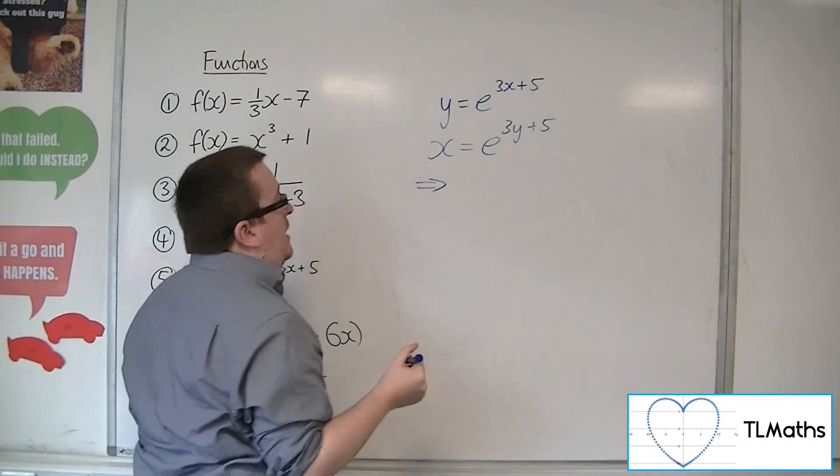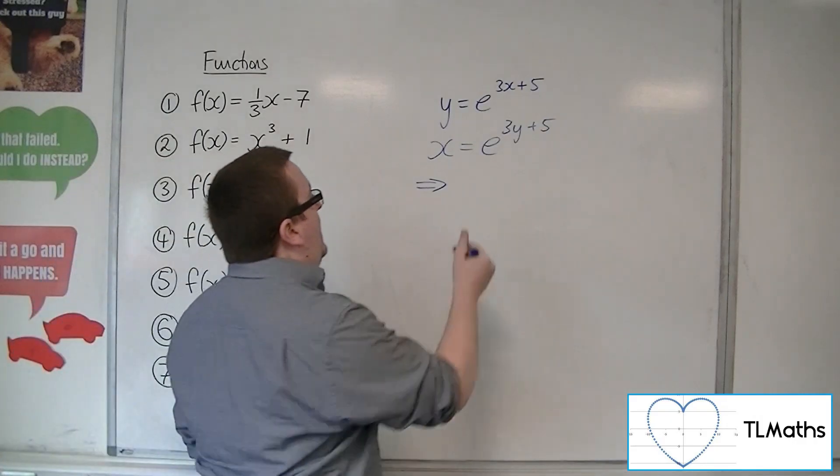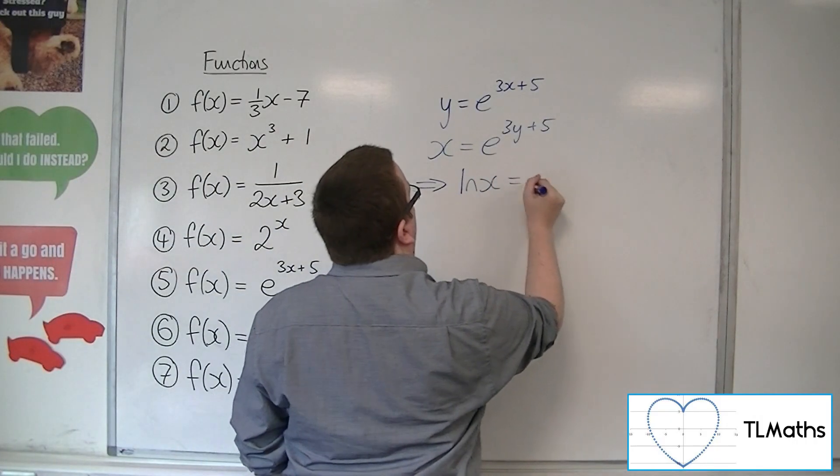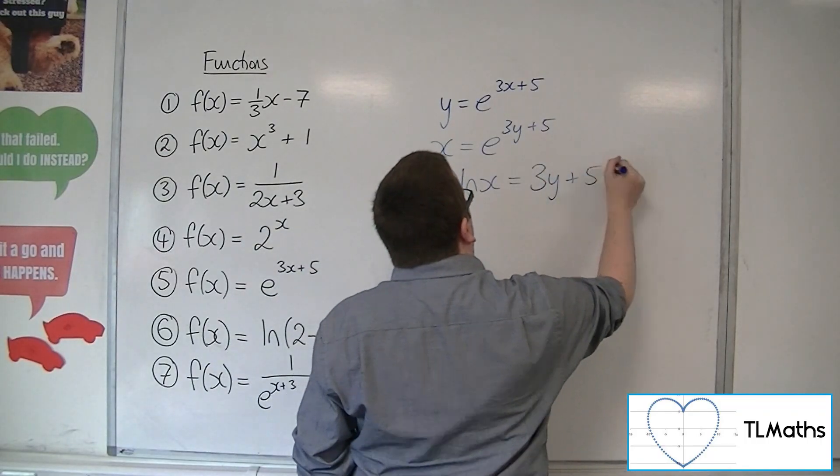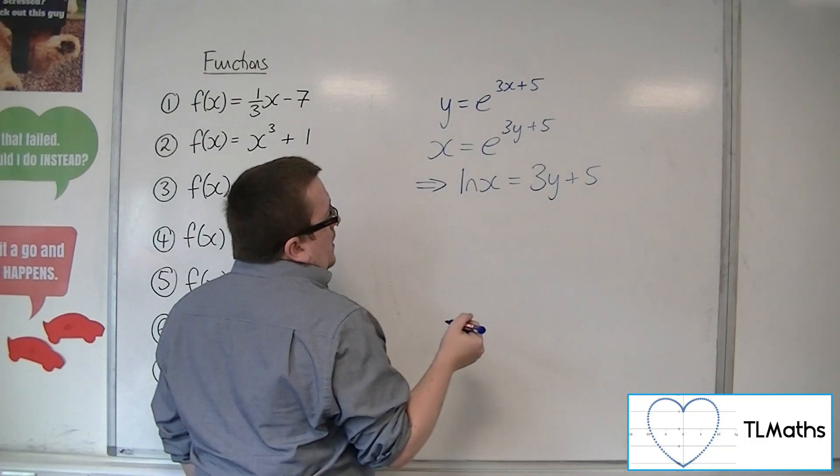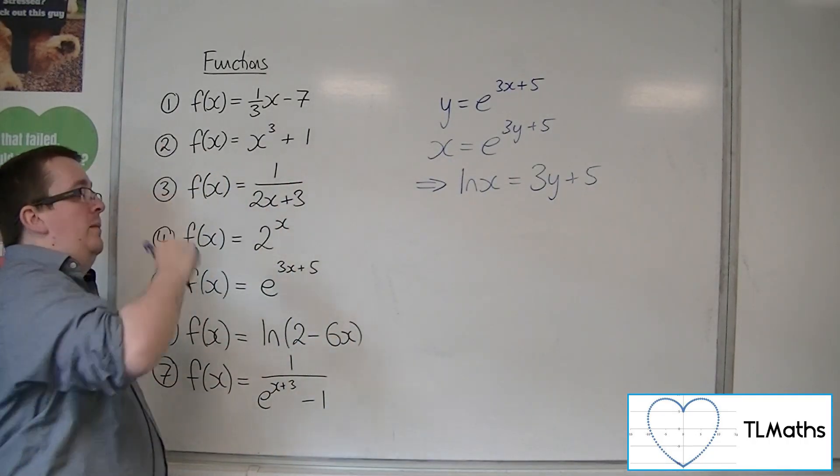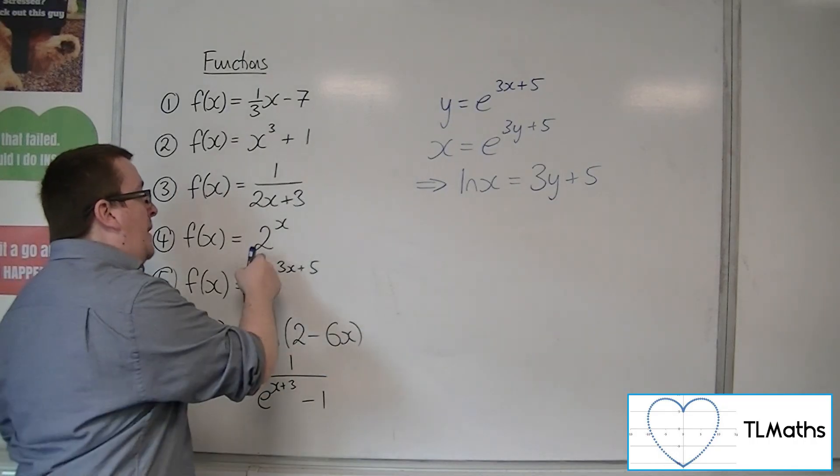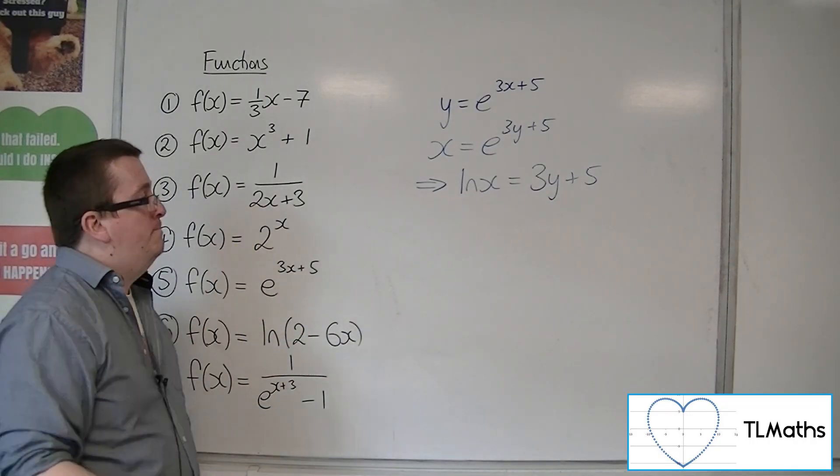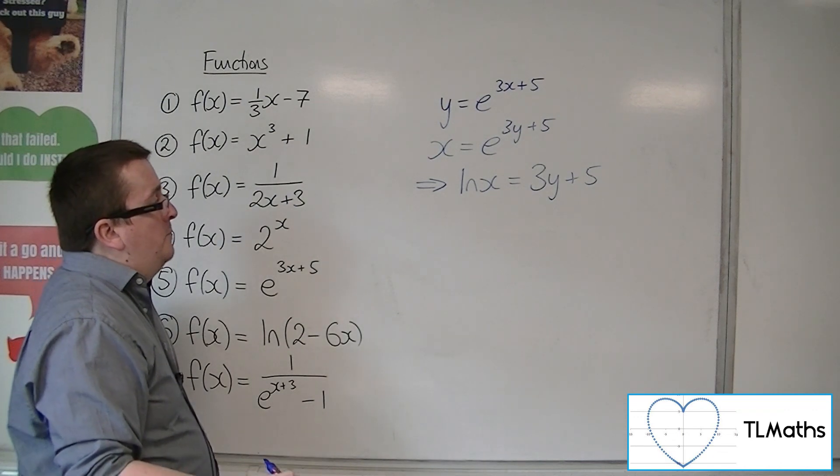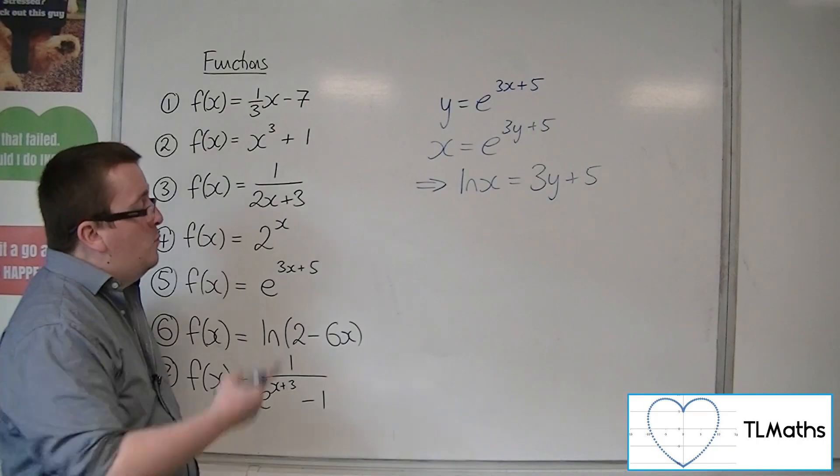Then in order to get rid of the e, I'm going to have to log both sides base e. So ln(x). And ln of e^(3y + 5) will just be 3y + 5. I could have also done that step immediately for the previous example as well. So when you log base 2, 2ʸ, it will just be y. You could just do that. But I wanted to show you using the log laws that it works in the same way as it does here.